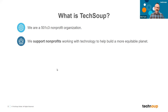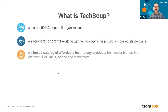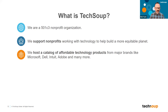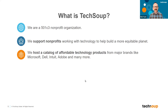We support nonprofits in the United States and around the world who are working with tech to make a more equitable planet. We host a catalog on our website TechSoup.org of offers from major technology companies — everybody from Microsoft, Dell, Intuit, Adobe, and many more. This is our effort to bring together philanthropic offers from the technology industry in one place, with discounted and donated offers available.